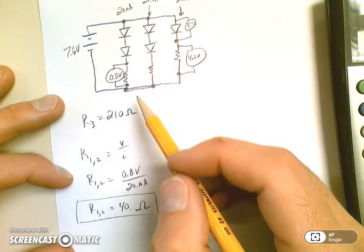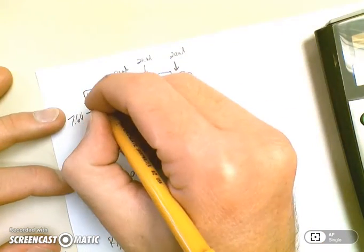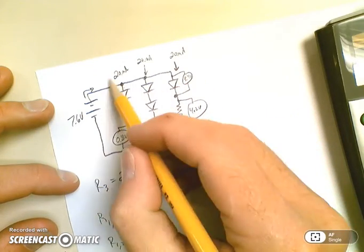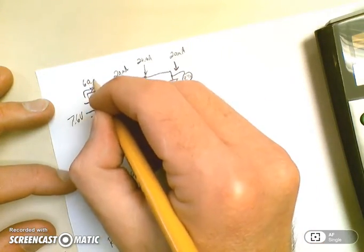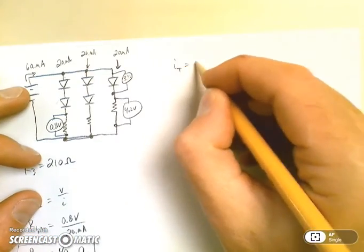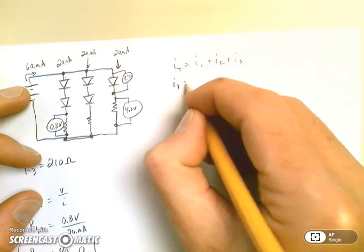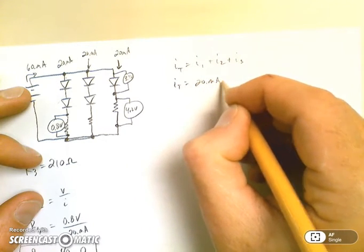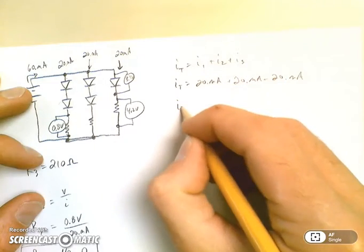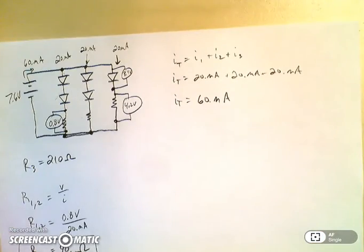Now I want to find the power, the total power of the battery and then the power consumed. How much current is drawn from the battery this time? Well, there's only three branches with 20 milliamps each, so this would be 60 milliamps. I can show my work for that. Total current equals I1 plus I2 plus I3, Kirchhoff's current law. So I have 20 milliamps plus 20 milliamps plus 20 milliamps.